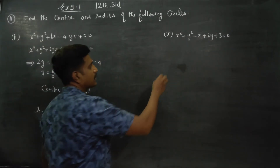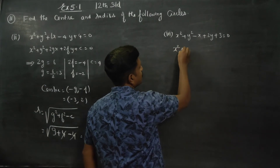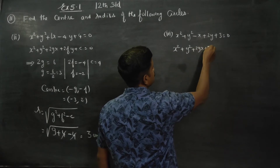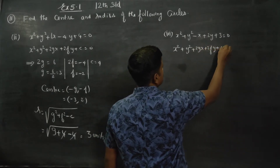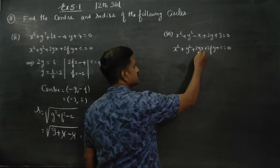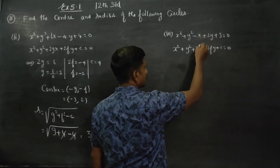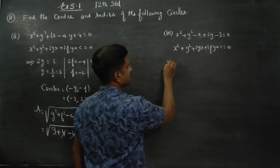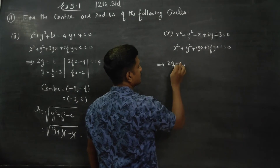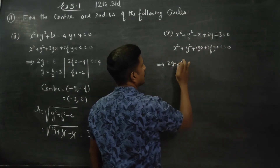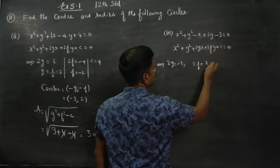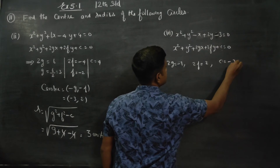Coming to the next sum, I am going to match the equation with the standard form x² + y² + 2gx + 2fy + c = 0. Comparing with the standard equation, my 2g is equal to minus 1, my 2f is equal to 2, and my c is equal to minus 3.